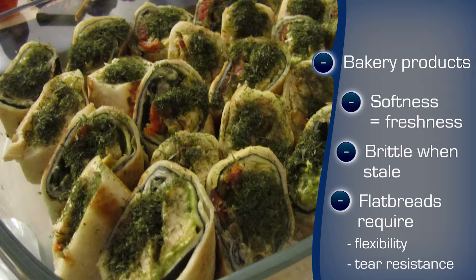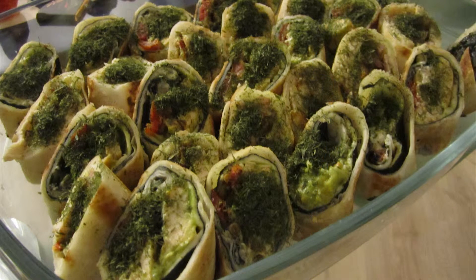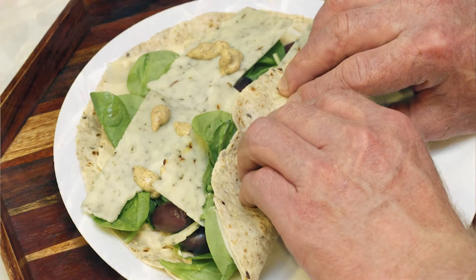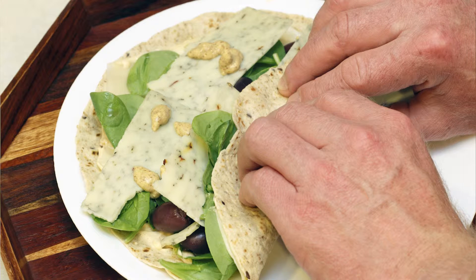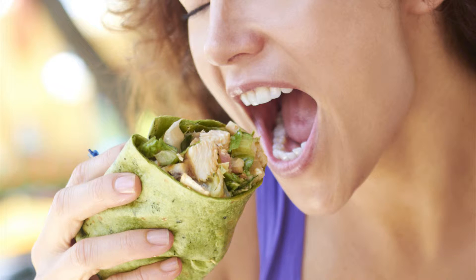Flour tortillas, chapatis, rotis, and their global relatives all need the elasticity and suppleness which allows manipulation, combined with good tear resistance, for a successful, functional yet delicious meal. Staling results in brittleness, so understanding the shelf life implications of ingredients, formulations, and packaging choices is important to avoid leaky fajitas.